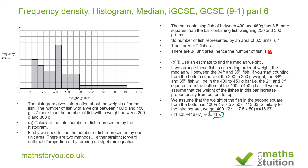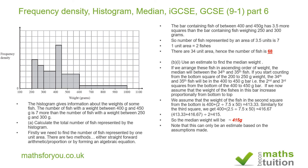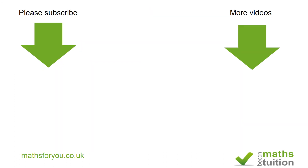So the median value is 415 grams. Don't forget that all of this is based on the assumption that each square contains exactly two fish. I hope that made sense — please subscribe and watch some of my other videos. Thank you for watching, bye!